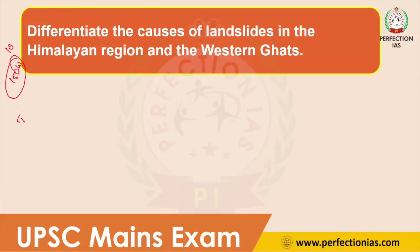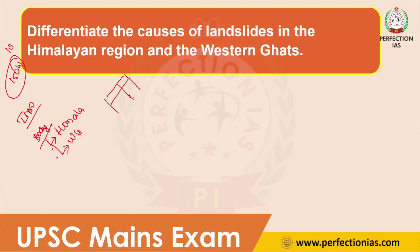For this question, first you have to write an introduction. In the introduction, you can define what a landslide is and quote some data related to the status of landslide in India. Then, in the body, this question contains two parts: first, the causes of landslide in the Himalayan region, and second, the causes of landslide in the Western Ghats region. You can also present this in tabular format — whichever format is compatible for you. After the body part, the last section is the conclusion.